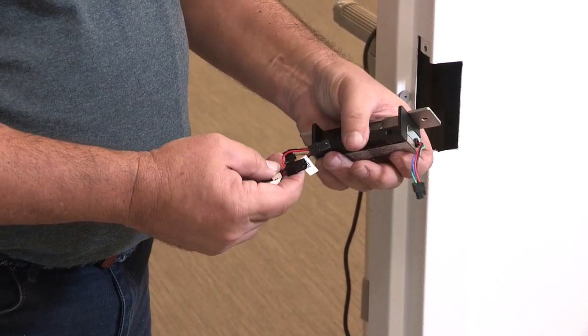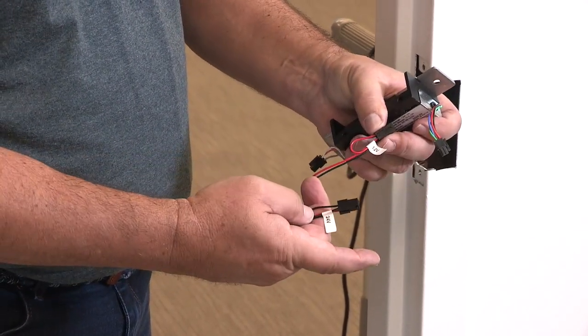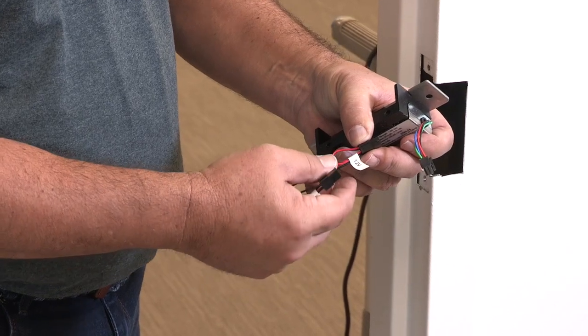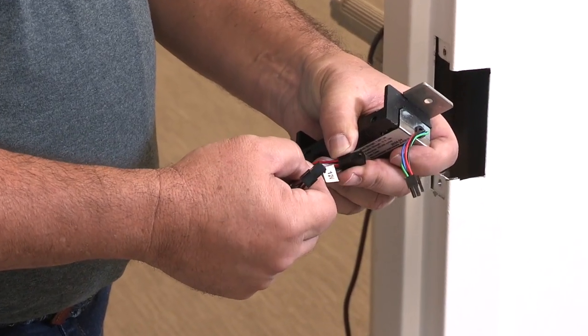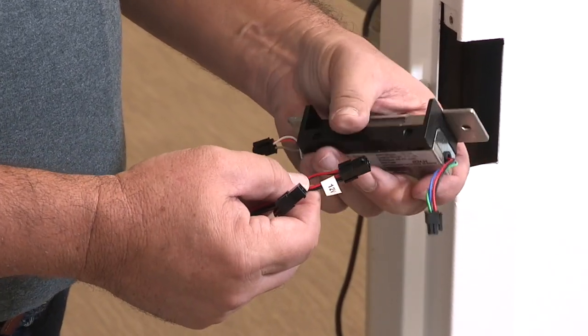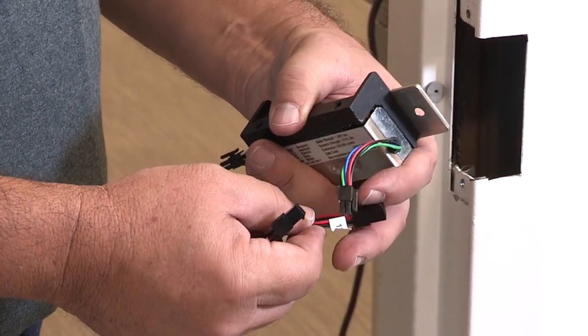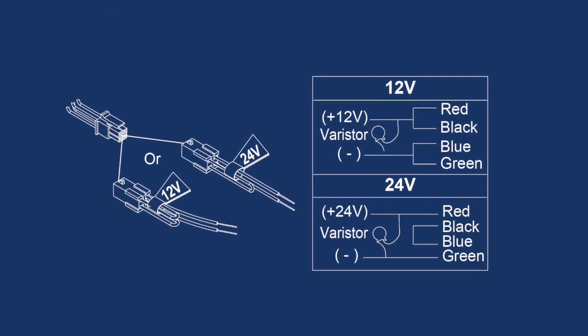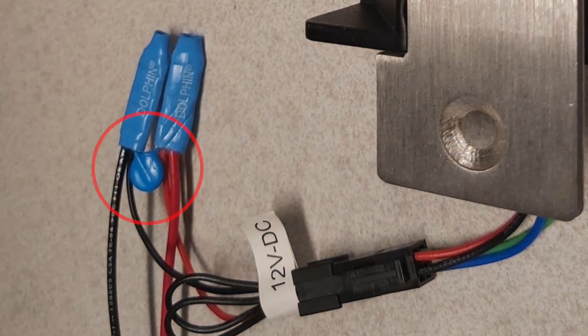12 or 24 volt power is selected using the correct black connector cable. This strike draws 260 milliamps at 12 volts DC. We recommend that the strike be on its own power circuit, and that you install an MOV varistar to prevent damage to the strike by power spikes.